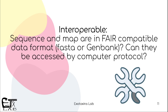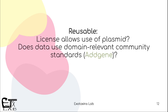Is the sequence and map in a FAIR-compatible data format like FASTA or GenBank, and can they be accessed by computer protocol? No. I was not able to find it in any of the normal sequence repositories or on FASTA or GenBank. I found a sequence, but it doesn't tell me where the features are, so I would have to run it through a program to try to find the features of that plasmid. A lot of things to do here. Is it Reusable? I looked for the license — I suppose they are selling it, but whether we are able to modify it, I'm not sure I could find that information. Does the data use domain-relevant community standards? Not really.